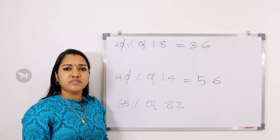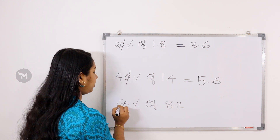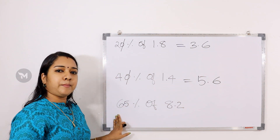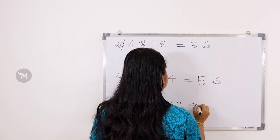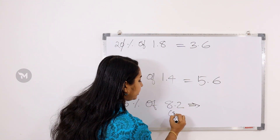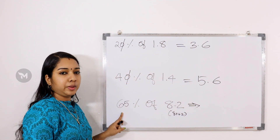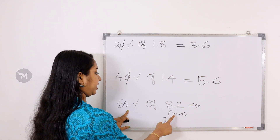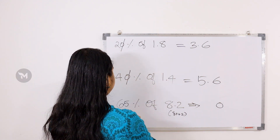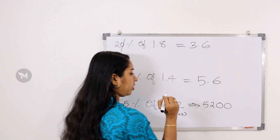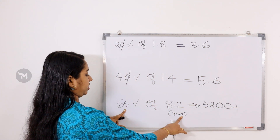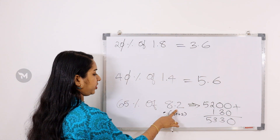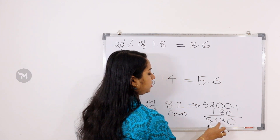Now, 65% of 18. Work through the calculation: 65 multiplied — there are decimal points to place. The answer comes to approximately 11.7. Here is where the decimal point goes, giving us 53.30 in a related step. We need to be careful placing the decimal point correctly.